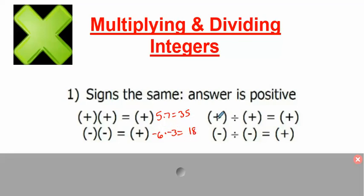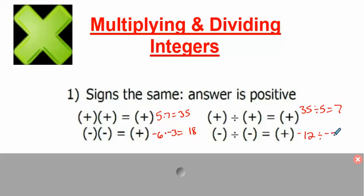Same thing for division — same sign. So 35 divided by 5 would be 7, obviously. But if we have negative numbers, let's say negative 12 divided by negative 3: 12 divided by 3 is 4, but the answer will always be positive. Same sign, you're going to have a positive answer.